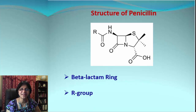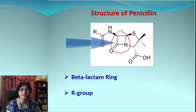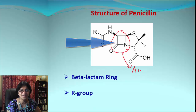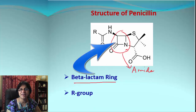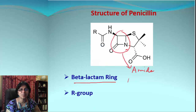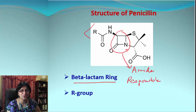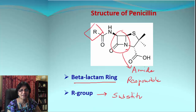Let's look at the structure of penicillin. The important things to keep in mind: there is a four-membered ring containing a nitrogen and a carbonyl group. That bond is called an amide bond, and the ring is called the beta-lactam ring. It is known that this beta-lactam ring is responsible for the antibiotic action.